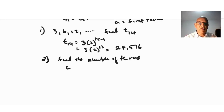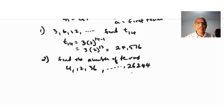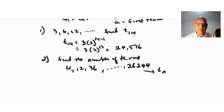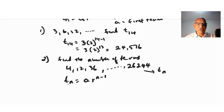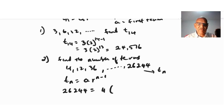Number two: given the sequence 4, 12, 36, ... up to 26,244, find the number of terms. The last term is Tn. Since we know Tn, a, and r, we can find the unknown n. The common ratio is 12 divided by 4 which is 3. So: 26,244 = 4 · 3^(n-1).